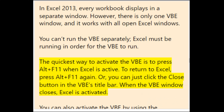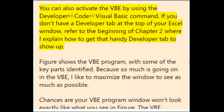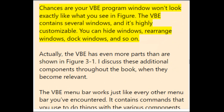The quickest way to activate the VBE is to press Alt+F11 when Excel is active. To return to Excel, press Alt+F11 again, click the Close button in the VBE title bar, or use Developer > Code > Visual Basic. If you don't have a Developer tab, refer to Chapter 2 to learn how to display it. The VBE contains several highly customizable windows — you can hide, rearrange, and dock windows.